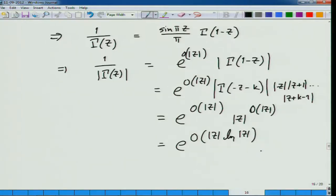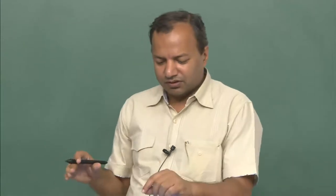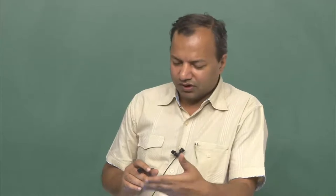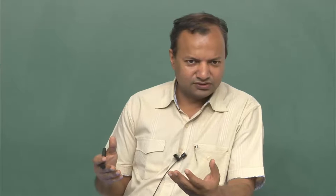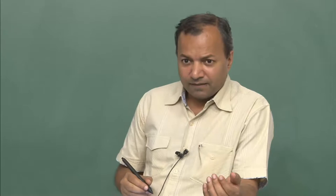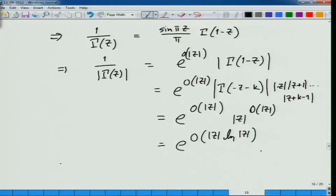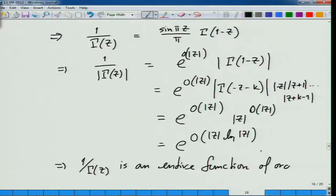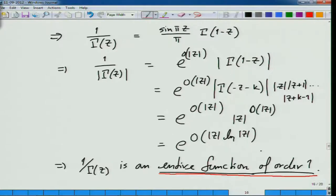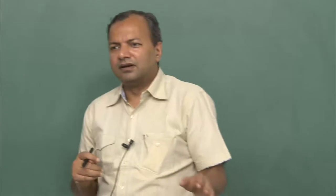This is interesting because it tells us 1/Γ(z) is always upper bounded by something of order z^z, which we can completely believe. Gamma has no zeros but has poles, so 1/Γ therefore has zeros at those points. So 1/Γ(z) is always bounded by some quantity and has no poles. This means 1/Γ(z) is an entire function of order 1.